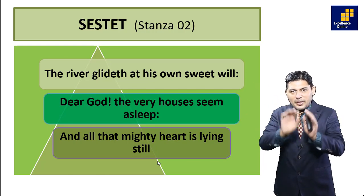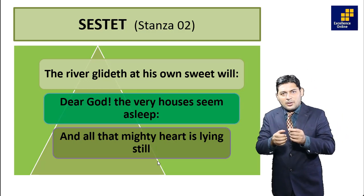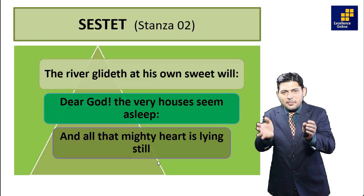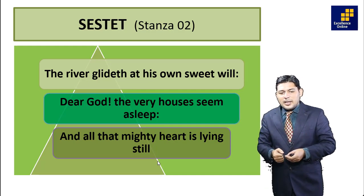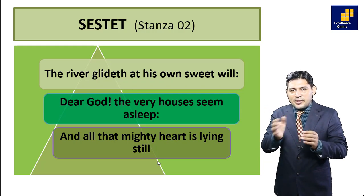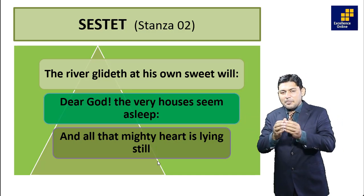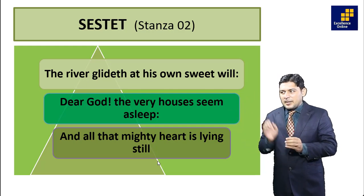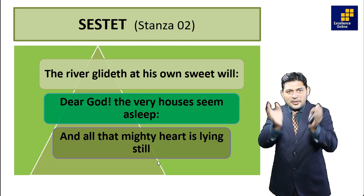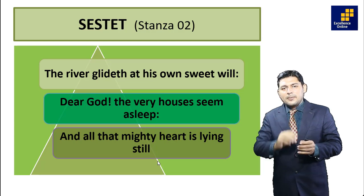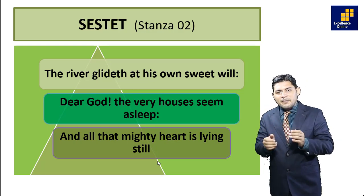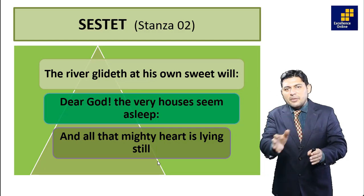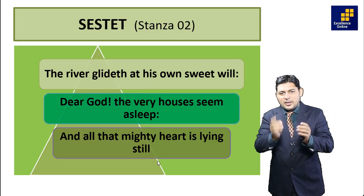'The very houses seem asleep' — this is apostrophe, where the poet addresses inanimate things. It seems as if this is a calm, peaceful environment. Houses are asleep means humans are still sleeping in London city — it was early in the morning. 'And all that mighty heart is lying still' — mighty heart means London city, lying still means it hasn't started its work yet; workers are still at home taking rest.